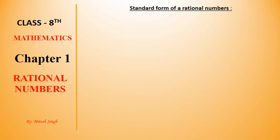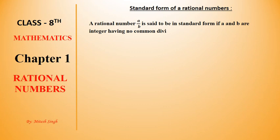Standard form of a rational number: A rational number A upon B is said to be in standard form if A and B have no common factor other than 1 and B is positive. The denominator should be positive and numerator and denominator should only be divisible by 1. If they are divisible by any other number, then it is not in standard form.